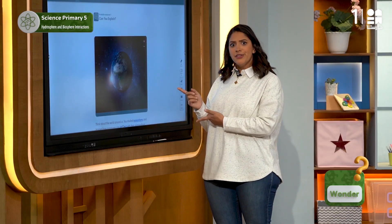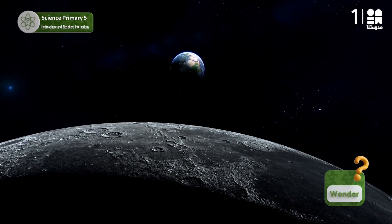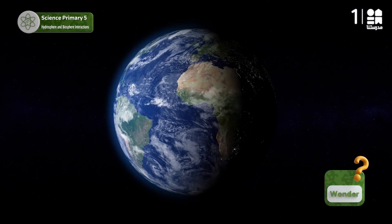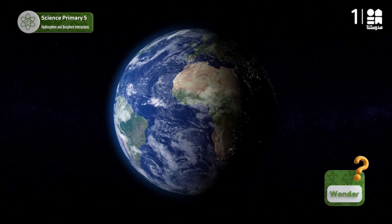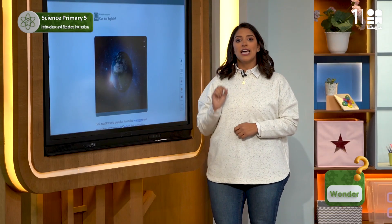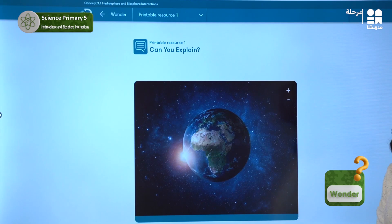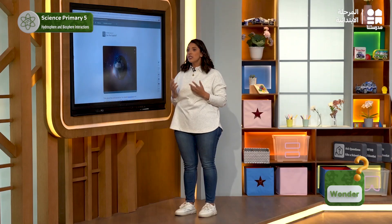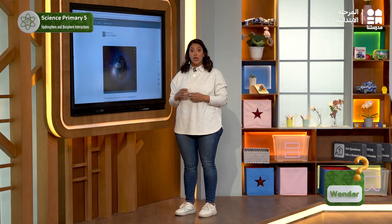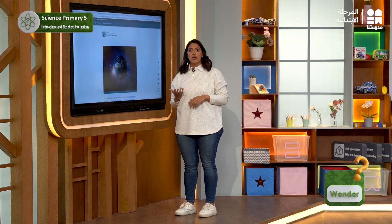We can simply identify this image as the Earth planet. In the first term, you studied ecosystems and learned how organisms interact with each other, and expressed these relations through food chains and webs.